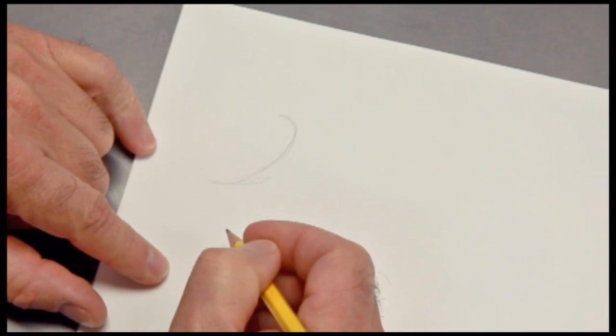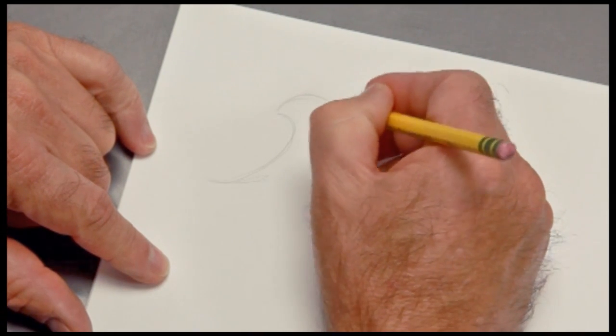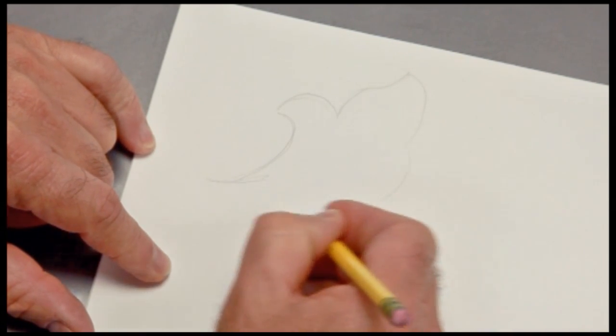Leaves are comprised of three different types of lines. Here's a very simple shape of leaf up here. And let me point out the different lines that comprise this leaf.